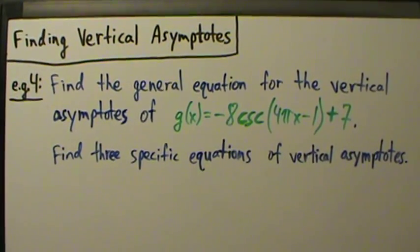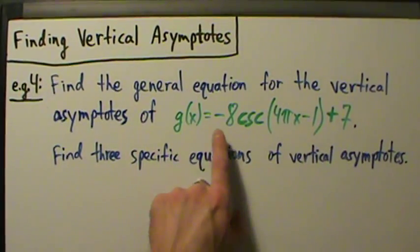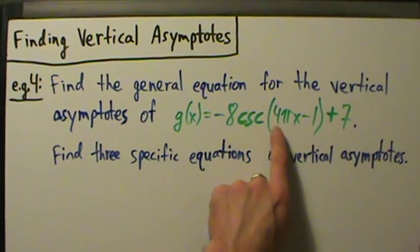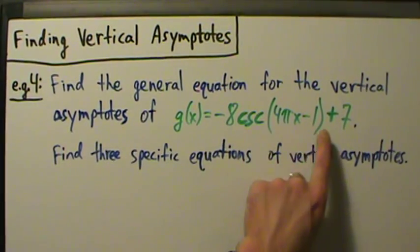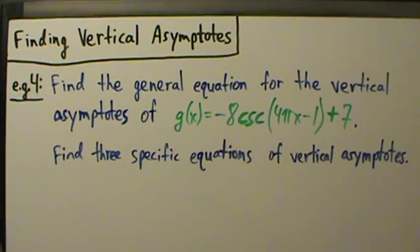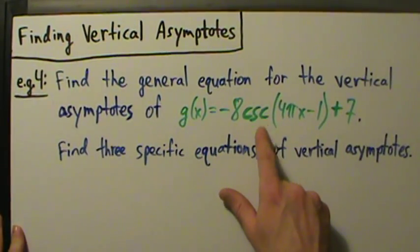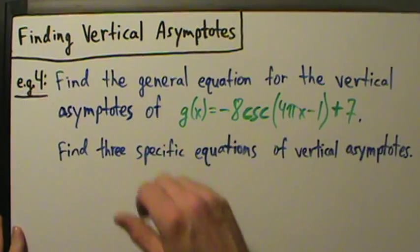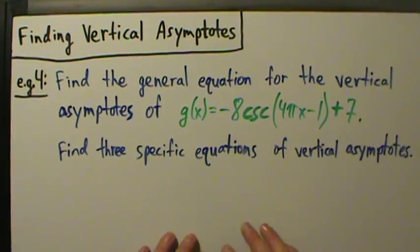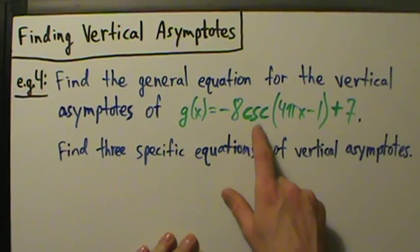Here's example 4: finding vertical asymptotes for trig functions in general. Find the general equation for the vertical asymptotes of g(x) = -8 csc(4πx - 1) + 7, and then find three specific equations of vertical asymptotes. We're going to approach this the same way we did examples 1, 2, and 3. In example 1 we did tangent, example 2 cotangent, example 3 secant, and now we're doing the cosecant.